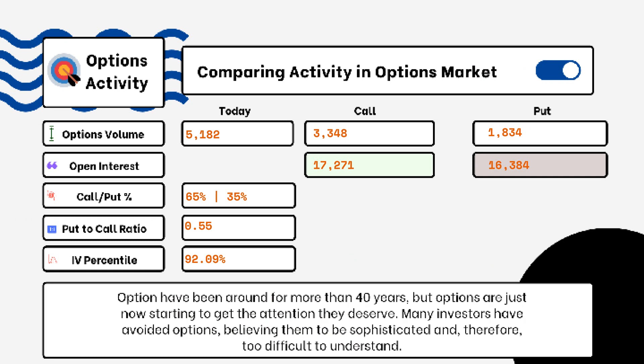We've provided details on today's option activity. What you'll be able to see here is options volume, open interest, implied volatility, put-to-call ratio, and IV percentile. One of the most popular indicators for traders is the put-to-call ratio.